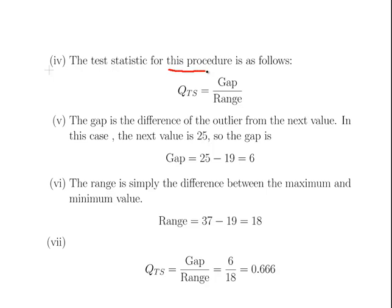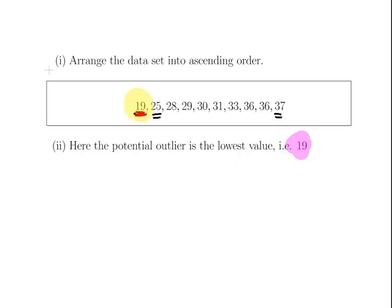Now let's get into the mathematics. The test statistic is as follows. The Q test statistic, TS subscript for test statistic, is the gap divided by the range. The gap is the difference of the outlier from the next value. If we recall on our number line, the potential outlier was 19.